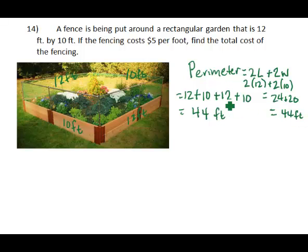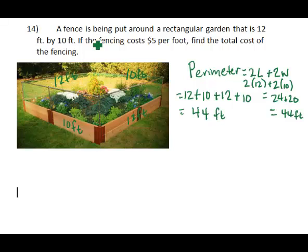So there are two somewhat different ways of calculating that all the way around the outside of the garden, the fencing would take 44 feet. The second part of the problem says if the fencing costs $5 per foot, find the total cost of the fencing.